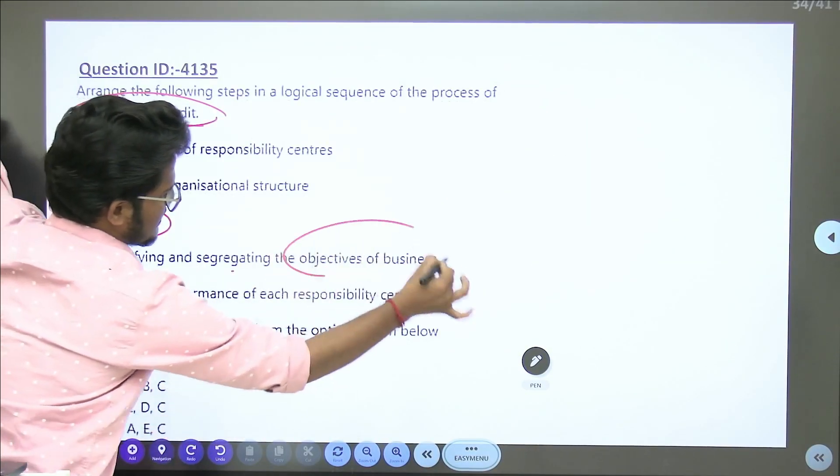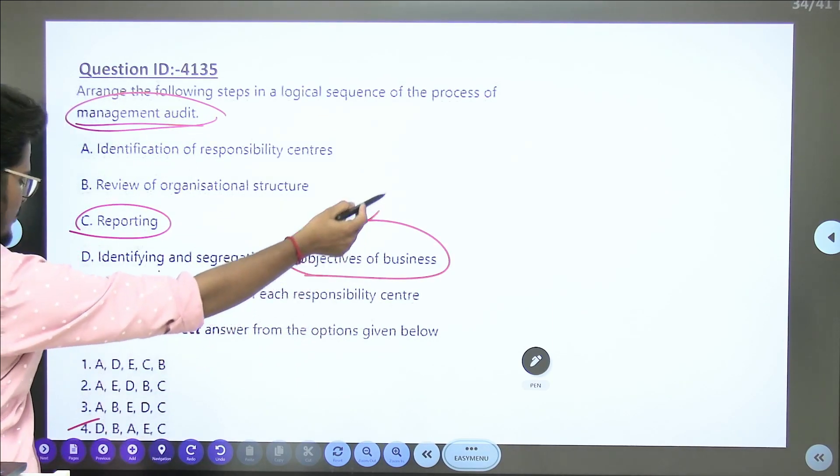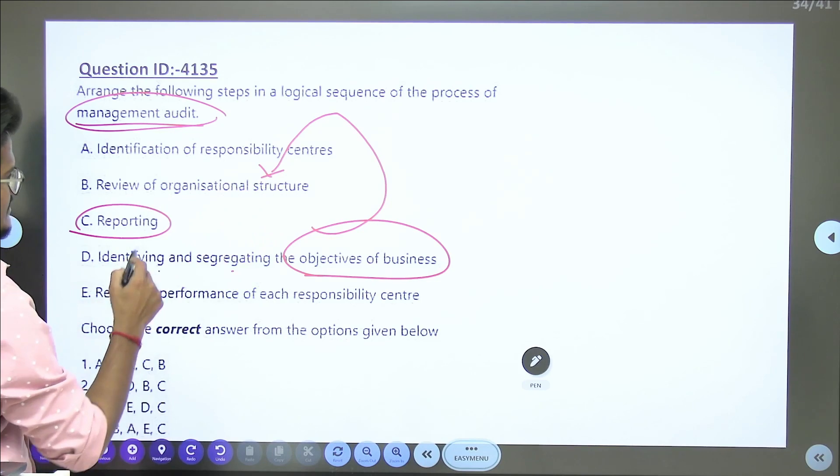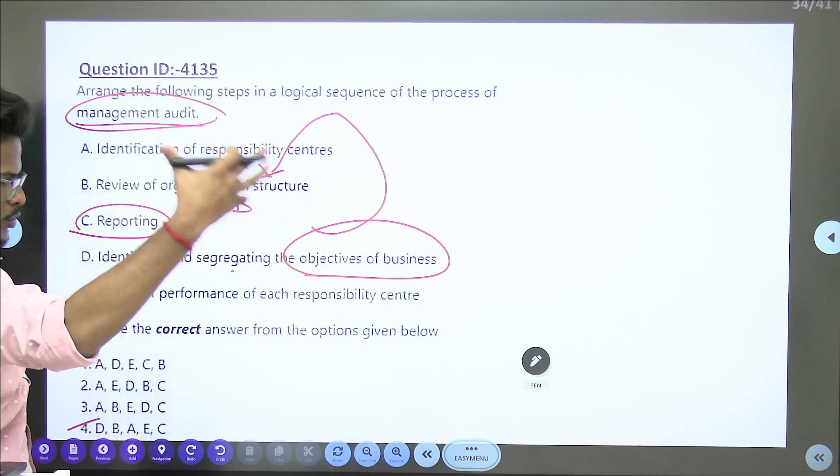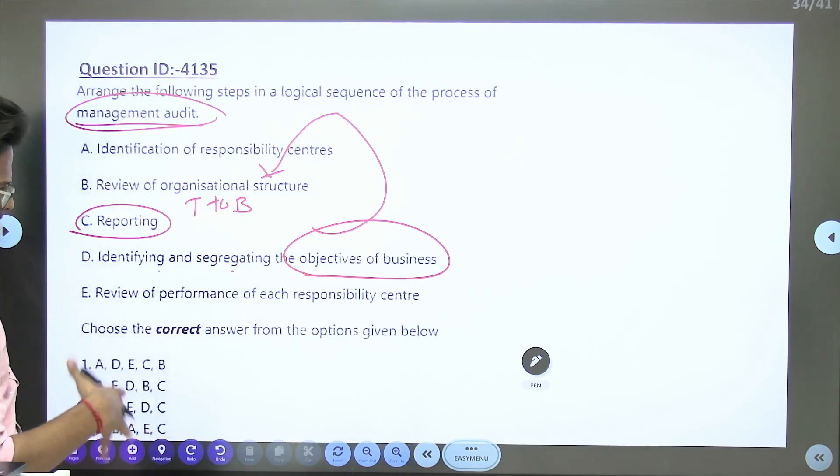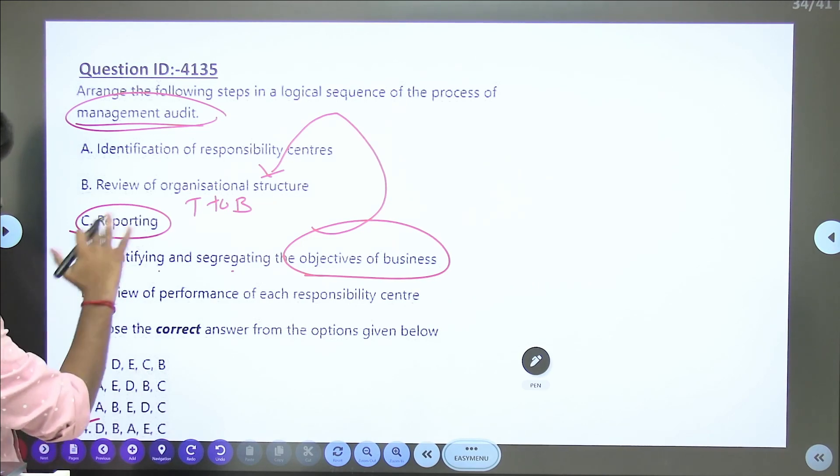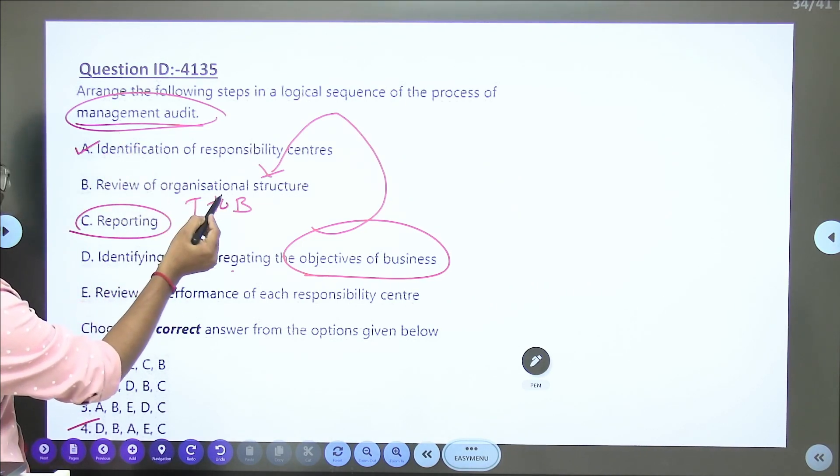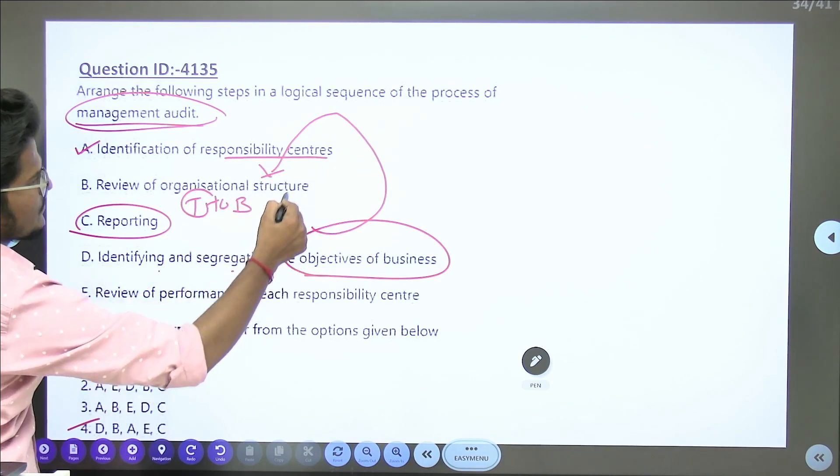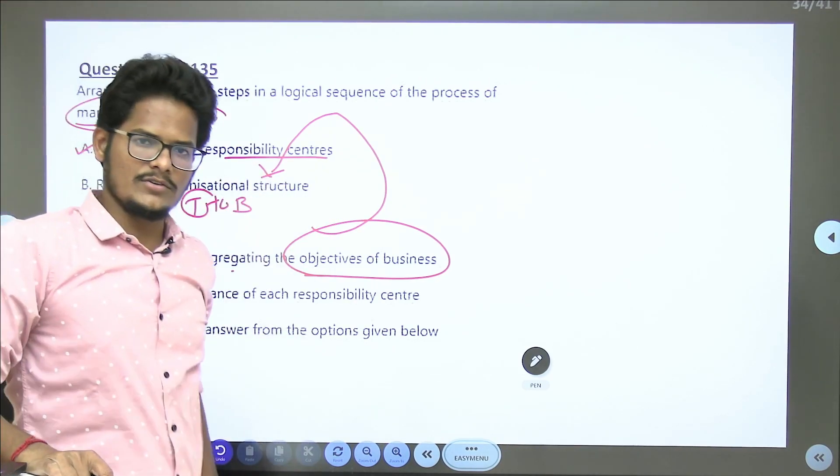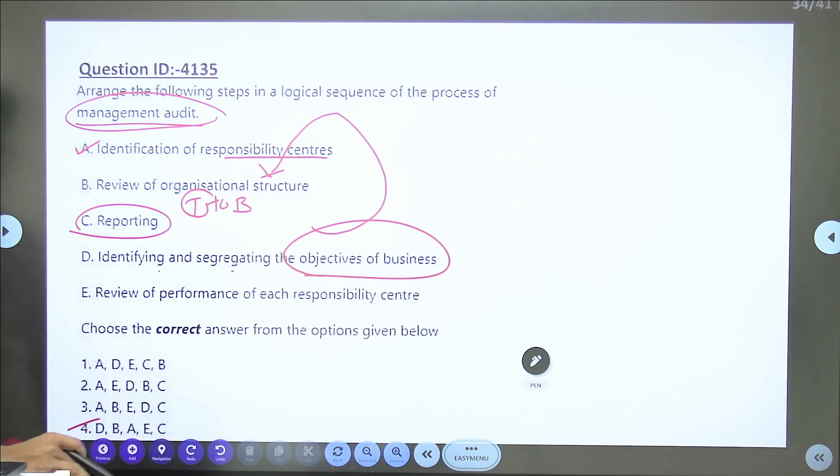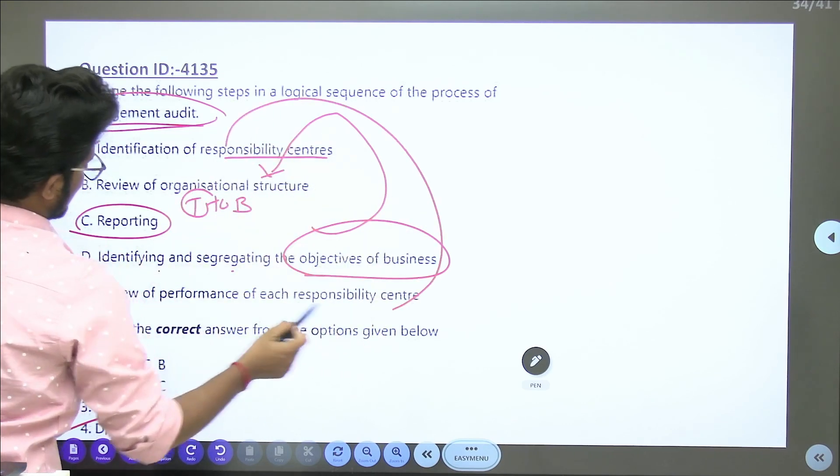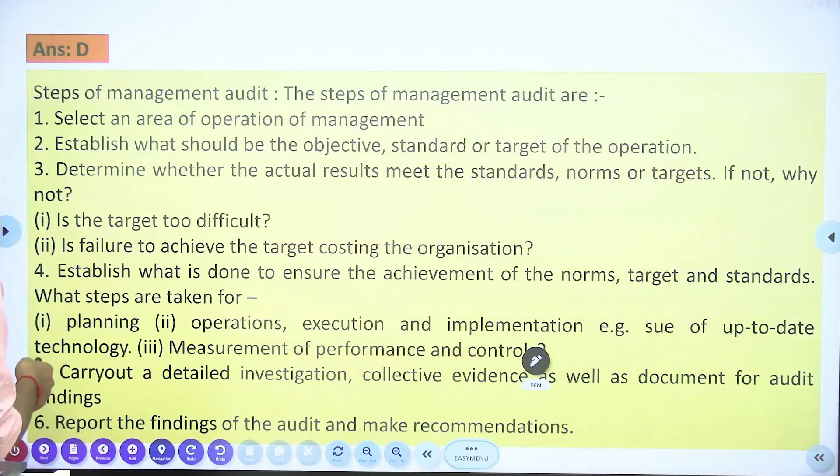First, identify and segregate objectives of business. Based on these objectives, you have review of organizational structure top to bottom. This is about management audit - Director, CEO, CFO, managers, subordinates, employees, clerks, attenders. Review the structure entirely. Later, every level should have a responsibility - revenue center, responsibility center, cost center, profit center, investment center. After that, review performance of each center. Then finally report that. That's management audit sequence.